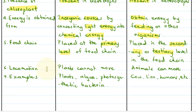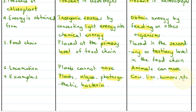In case of locomotion, members of the plant kingdom could not move, whereas all members of the animal kingdom showed locomotion — they could move. Examples of autotrophs were plants, algae, and photosynthetic bacteria. Examples of heterotrophs are cow, lion, humans, etc.